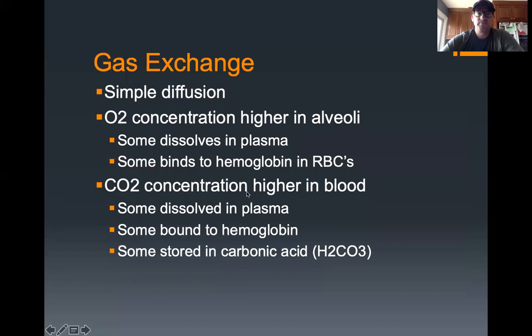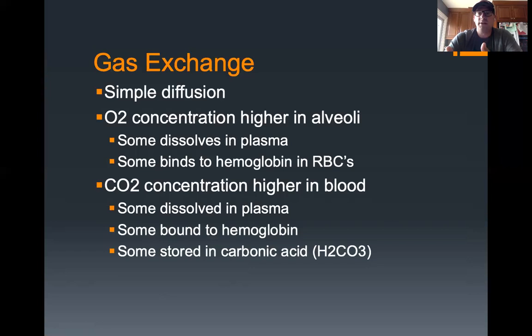The key thing that happens in the lungs is gas exchange, which occurs through simple diffusion. The oxygen concentration is higher in the alveoli than in the capillaries surrounding them, so oxygen moves out of the alveoli into the capillaries. Some of that oxygen dissolves in blood plasma, and some binds to the protein hemoglobin in red blood cells. Carbon dioxide concentration is higher in the capillaries, so it diffuses out. Some dissolves in the plasma, some binds to hemoglobin, and some combines with water to form carbonic acid.